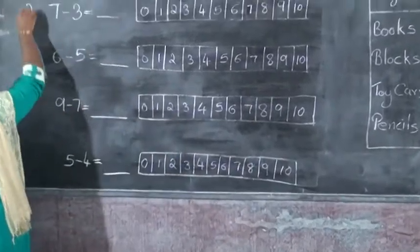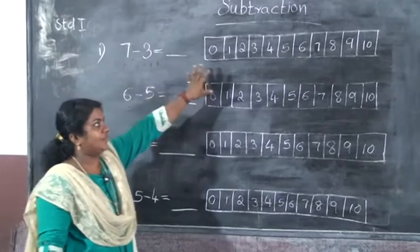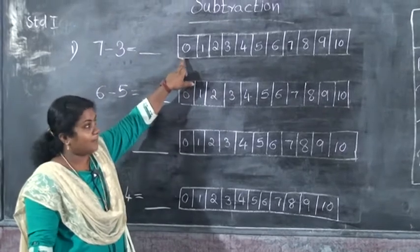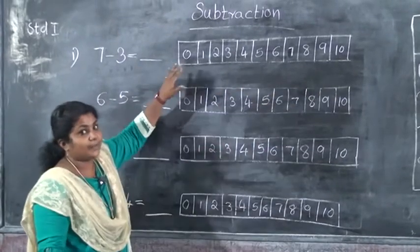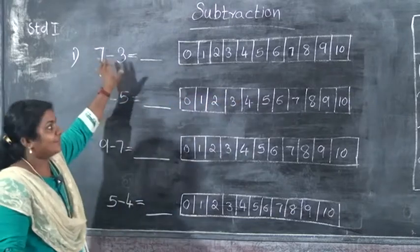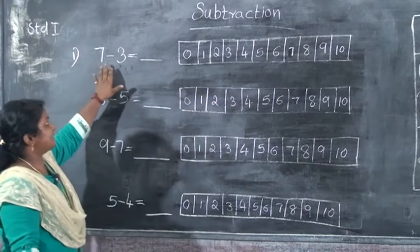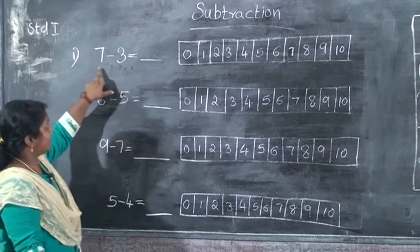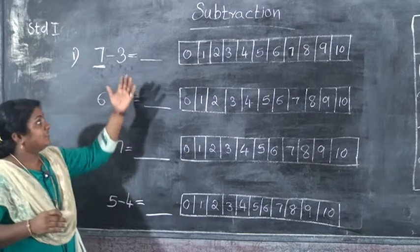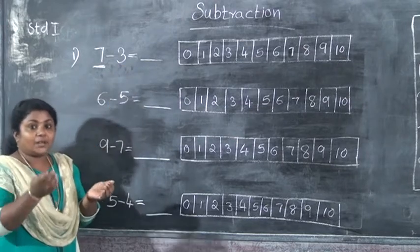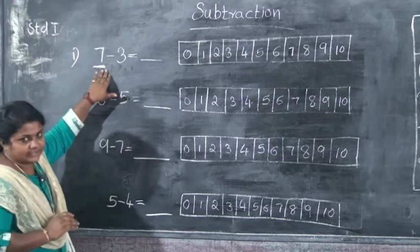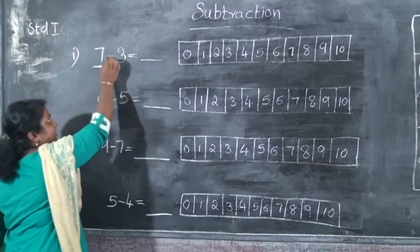Here the first question is 7 minus 3, and here I have written a number strip with numbers from 0 to 10. We are subtracting using this number strip. In subtraction, the big number is written first — the small number is subtracted from it. So we want to write the big number first, then put the subtraction sign.